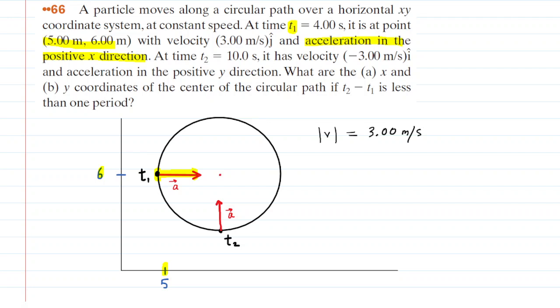So that's important. And then similarly, at a time of t2, which is at 10 seconds, we know that the acceleration is in the positive y-direction. So it's pointing upward. And again, notice how we've drawn it. We have that acceleration pointing towards the center of the circle.